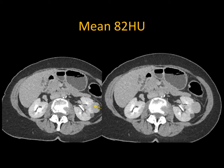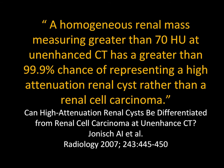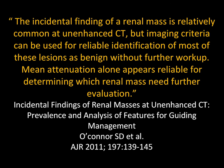An article by Jonas makes the point that homogeneous renal masses measuring over 70 Hounsfield units on non-contrast are 99.9% benign lesions. There is really nothing to think about — it's very simple.